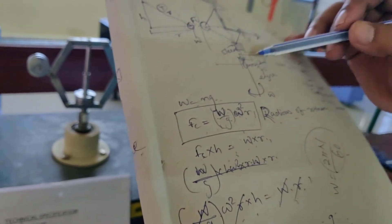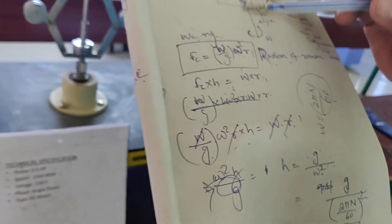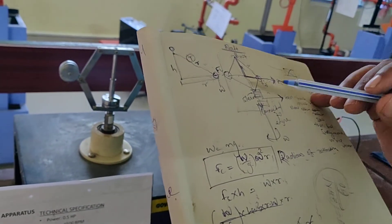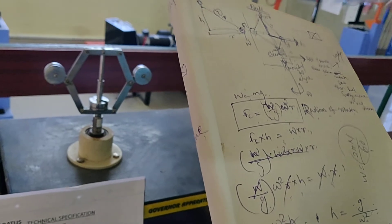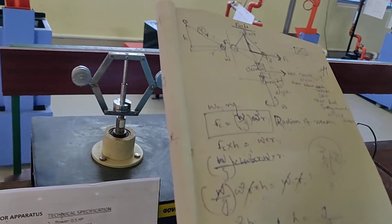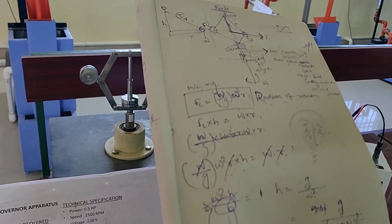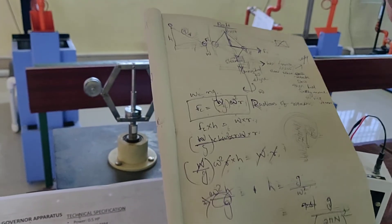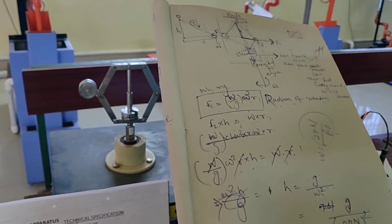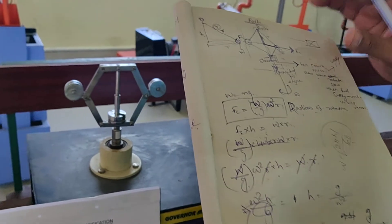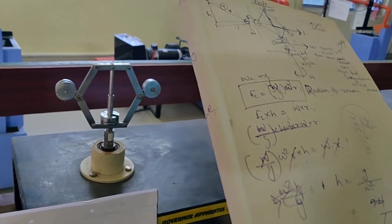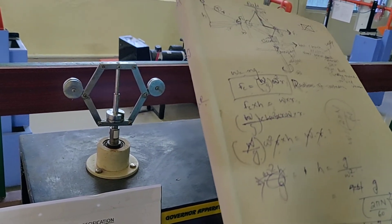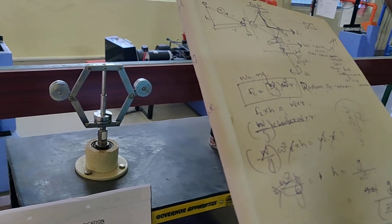By this governor, we can also calculate the centrifugal force and height. This is the main fundamental of the Watt governor, or simple governor. Remember that the governor is only for governing — that means to supply fuel according to speed. Whenever the engine needs fuel, the governor supplies it by governing the throttle valve. By the help of the bell crank mechanism, the fuel is supplied to the engine so that the engine can run smoothly.